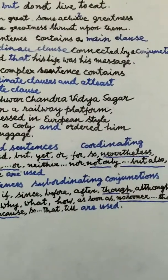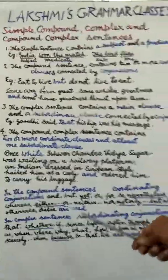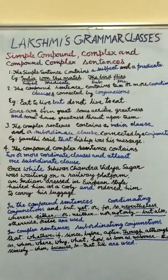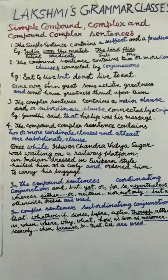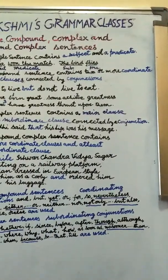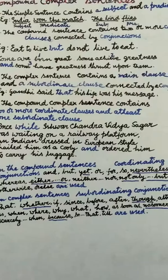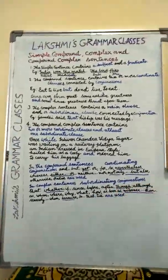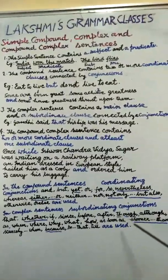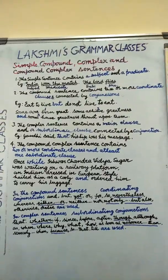In complex sentences, subordinating conjunctions are used: that, whether, if, since, before, after, though, as, when, where, while, what, how, as soon as, no sooner…than, scarcely…when, because, so that, till.